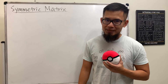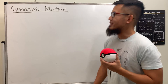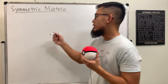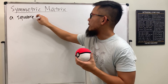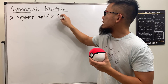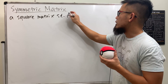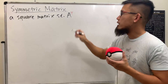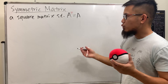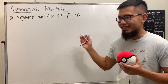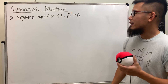Hello, linear algebra — good to see you again. Today we'll be talking about symmetric matrices. The definition is straightforward: a symmetric matrix is a square matrix such that if you take the transpose of A, you get A back. Some of the problems based on this are really cool, and I'm going to show you guys two of them, and also ask you a question to think about.